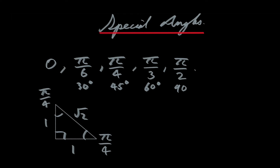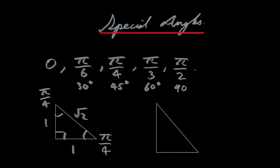The other special triangle is also a right angle triangle. It has a side length of one, a hypotenuse of length two, and the remaining side length is the square root of three. The angle of pi over six is here, and the angle of pi over three is here.